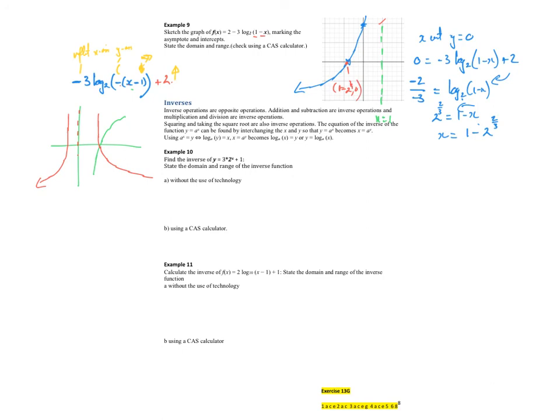The y-intercept. Let's just put x equal to 0. So I get f of 0 equals 2 minus 3 log base 2 of 1. Log base 2 of 1 is 0. So I just get equal to 2. Which seems reasonable. 0, 2.